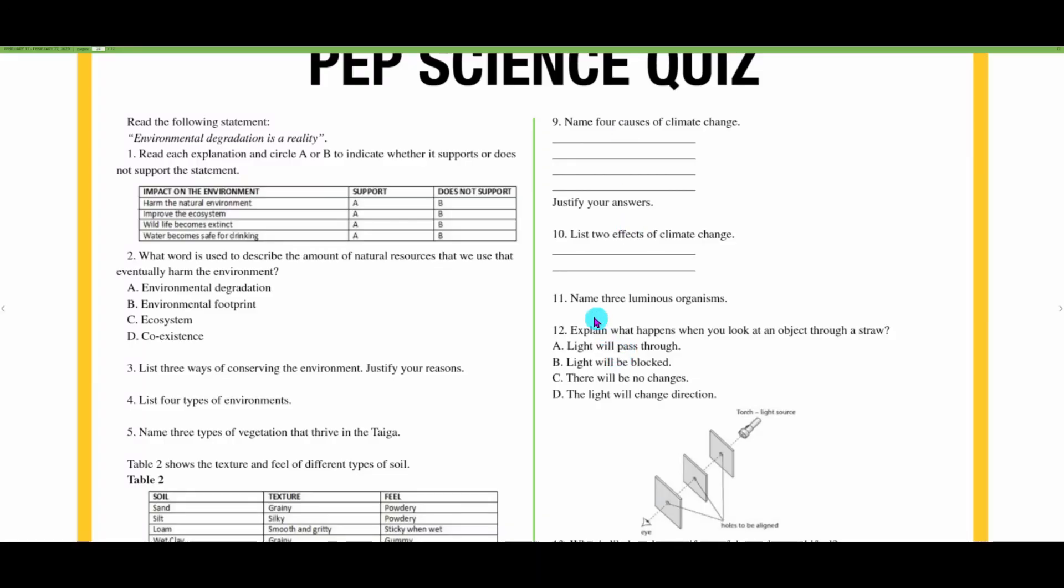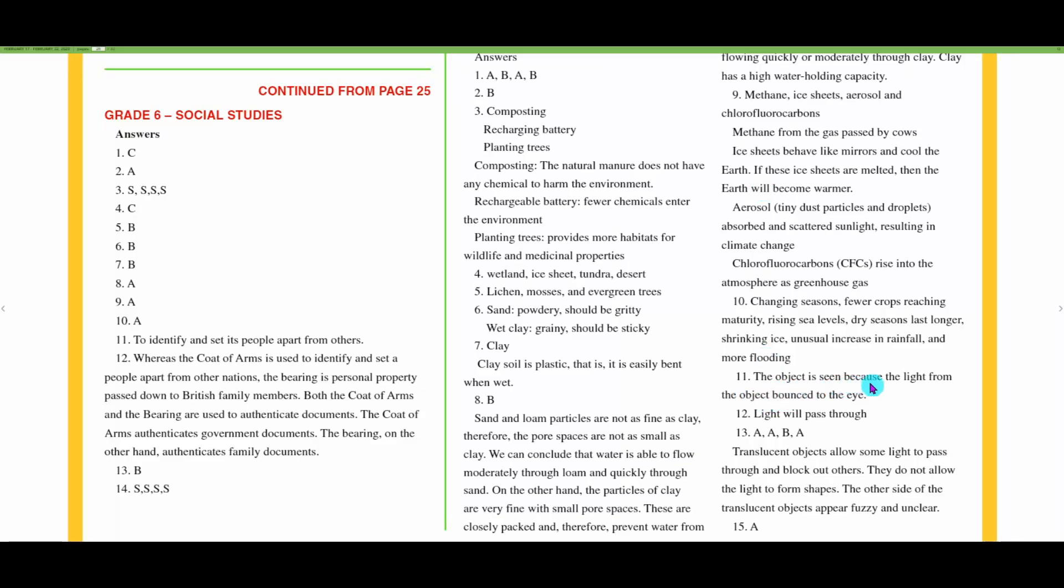Number eleven: name three luminous organisms. They are not describing the luminous organisms, they are telling us how we see, describing the process by which we see things. In order for me to see an object, light has to bounce from that object and be directed to my eyes. We have the firefly, the glow worm, jellyfish that are also luminous, and other microorganisms such as those found in the waters in the luminous lagoon in Trelawney.